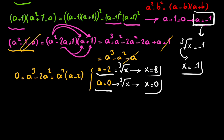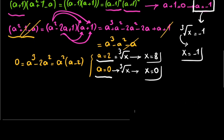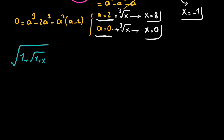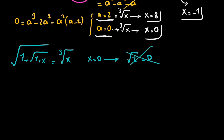We have three potential solutions, but don't forget to check them — that's very important. The original equation is square root of 1 plus square root of 1 plus x equals cube root of x. If x equals 0, on the left side we get square root of 2, and on the right side we have 0. That's not correct, so x is not equal to 0.